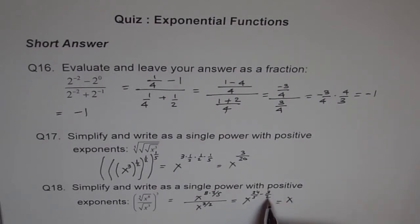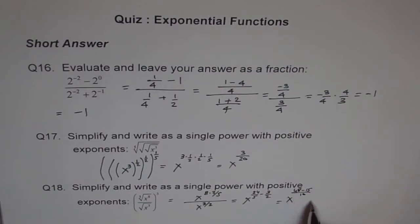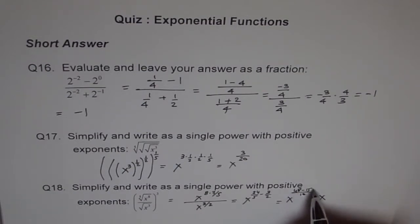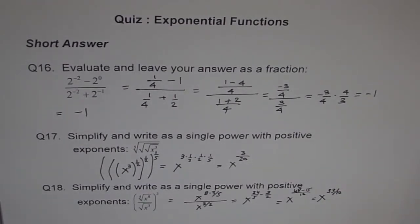With the common denominator of 10, we get 48 minus 15, which equals 33, so the answer is x to the power of 33 over 10. That is how you simplify these expressions. I hope you understand.